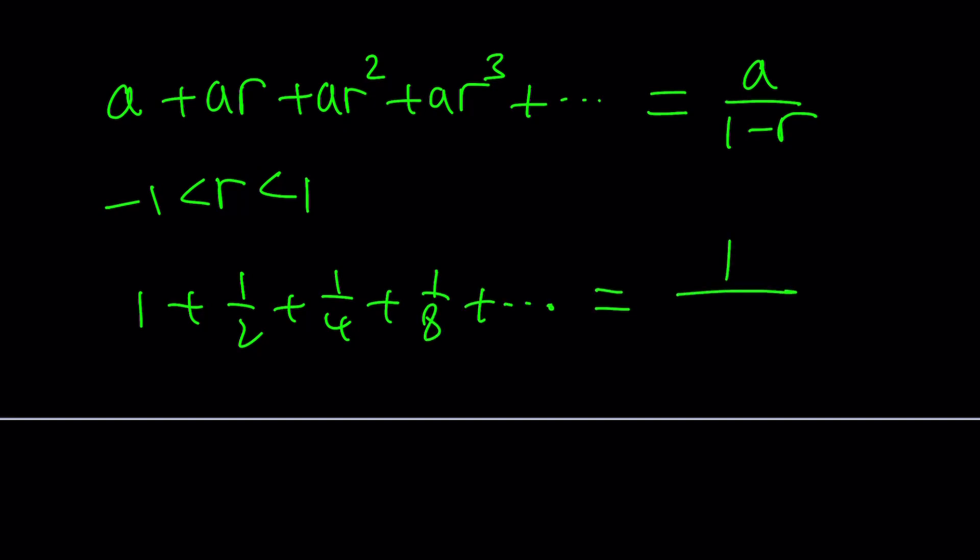And obviously, in this case, the first term is 1, and the common ratio, which is the ratio between two consecutive terms, is 1 half, and it's going to give you a 2.